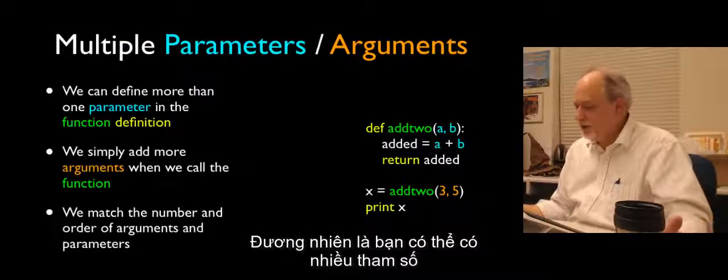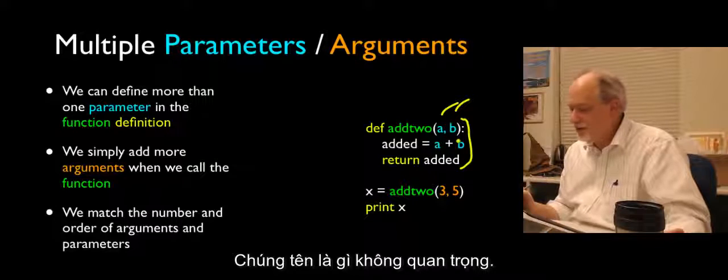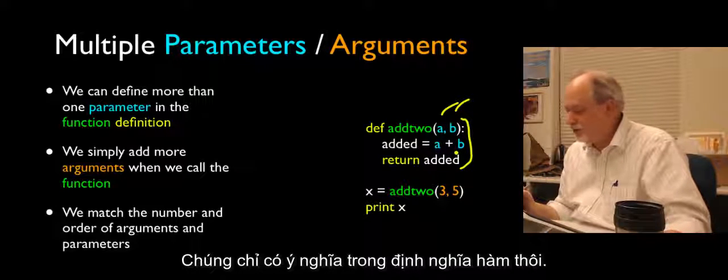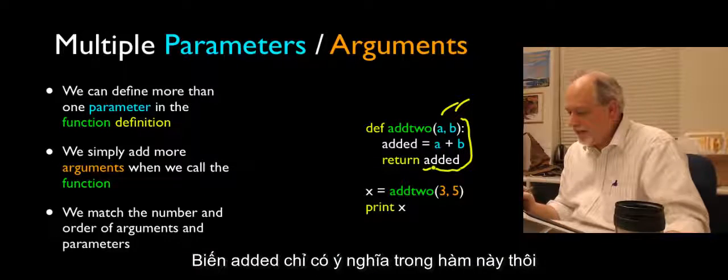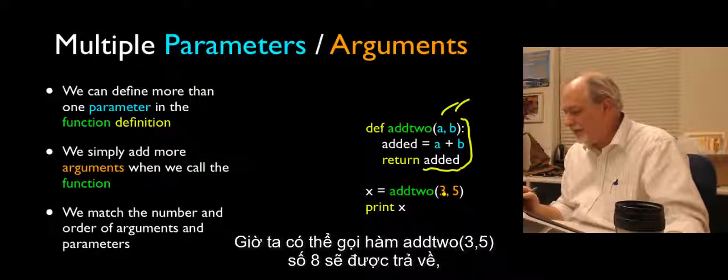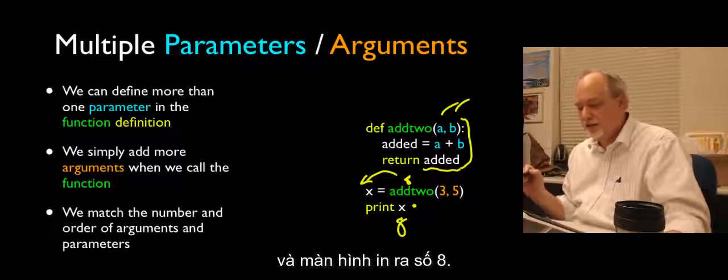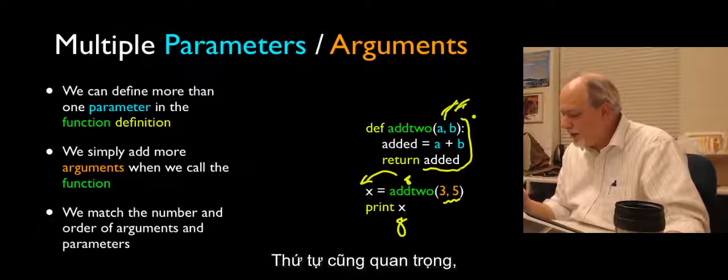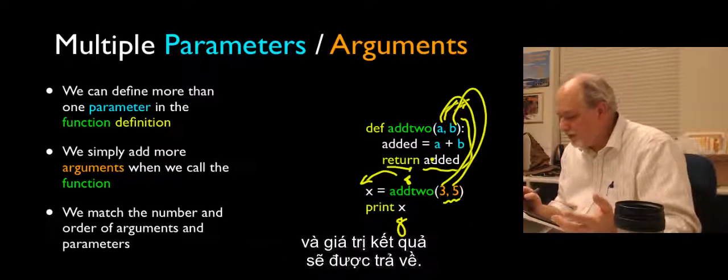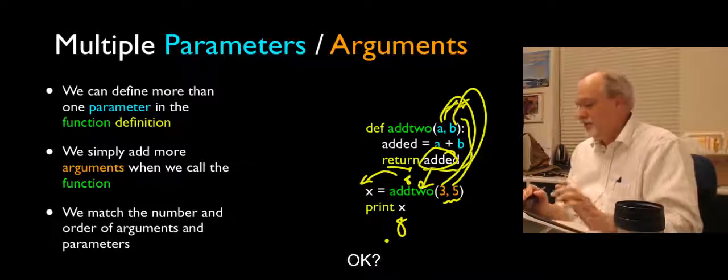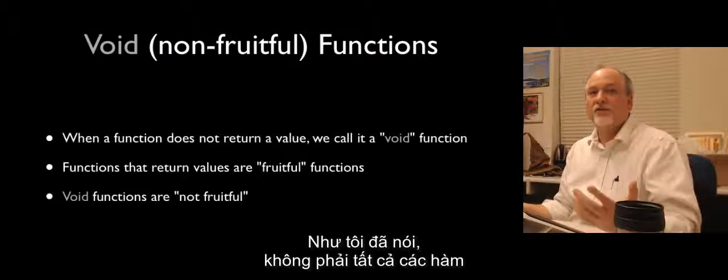So, of course, you can have more than one parameter, and they are in order. So, here we have an a and a b. The name of these things doesn't really matter. They're just relevant inside of the function definition. So, we are going to add two numbers together by taking a plus b, and then returning the sum. The added variable is just kind of local to this function. And now we can say, you know, add two, three comma five, and then this will come back as eight, and then eight will get assigned into x, and so that will print out eight. And so, you can have as many of these as you want, and the order matters, and there's a one-to-one correspondence. Three goes to a and five goes to b when the thing is called. And then the return value, again, comes back. OK? So, that's sort of arguments. And like I said, not all functions have to return values. We call them void functions when they don't return anything. It's totally fine for that to be the case.